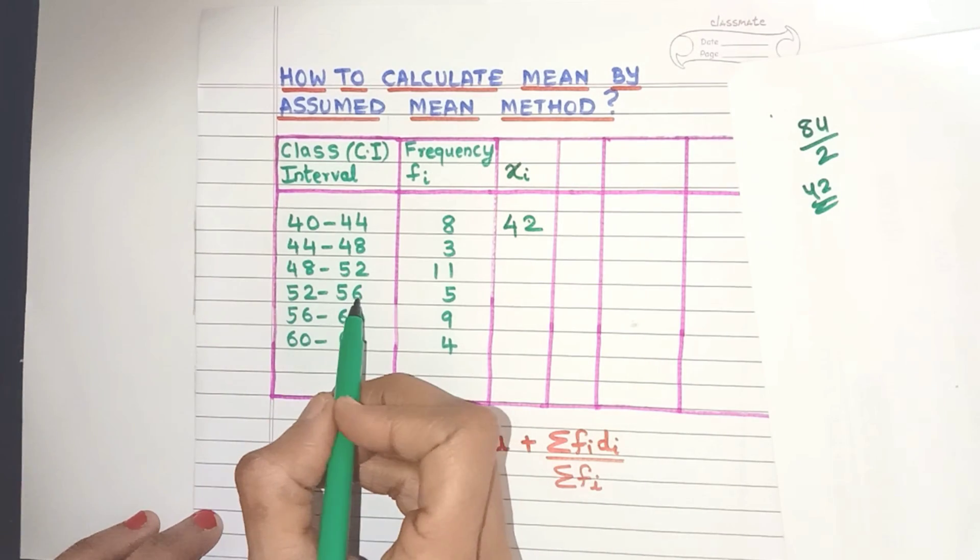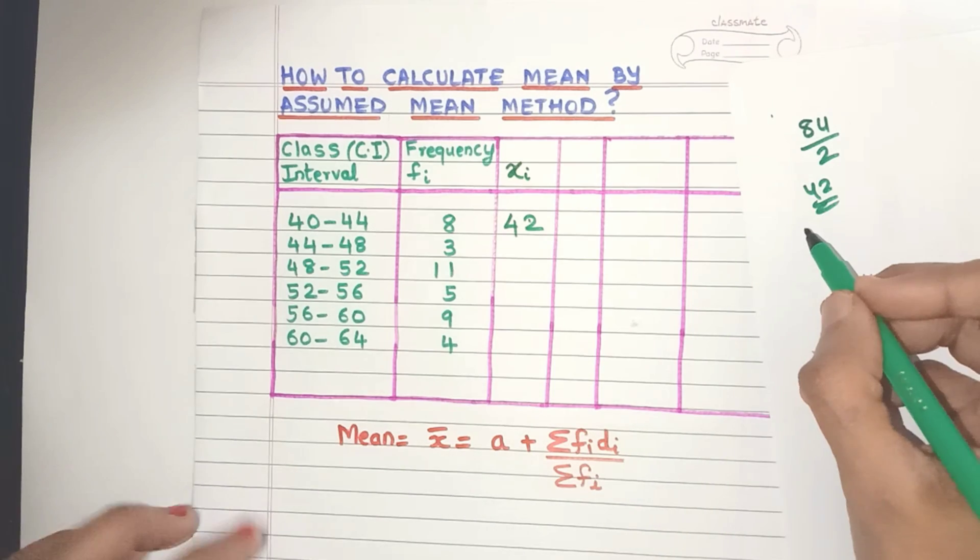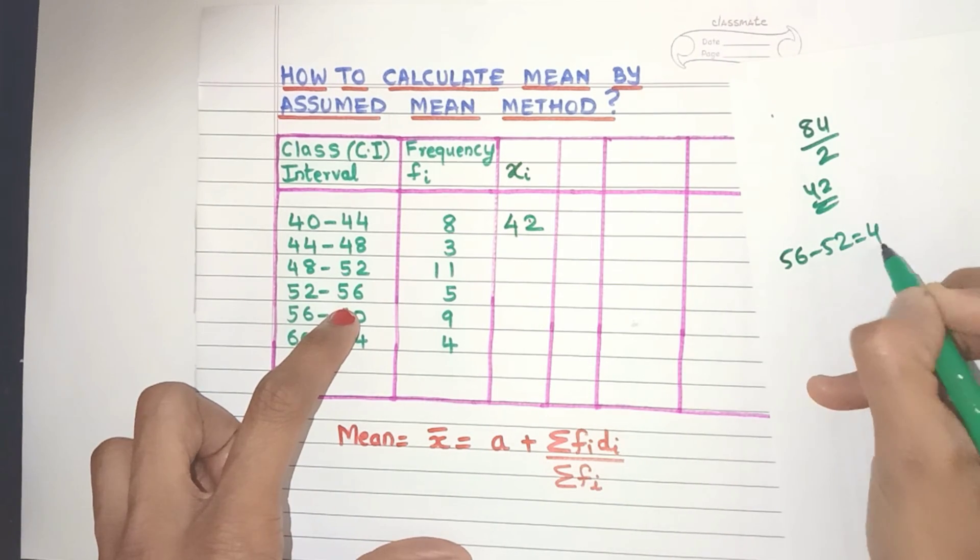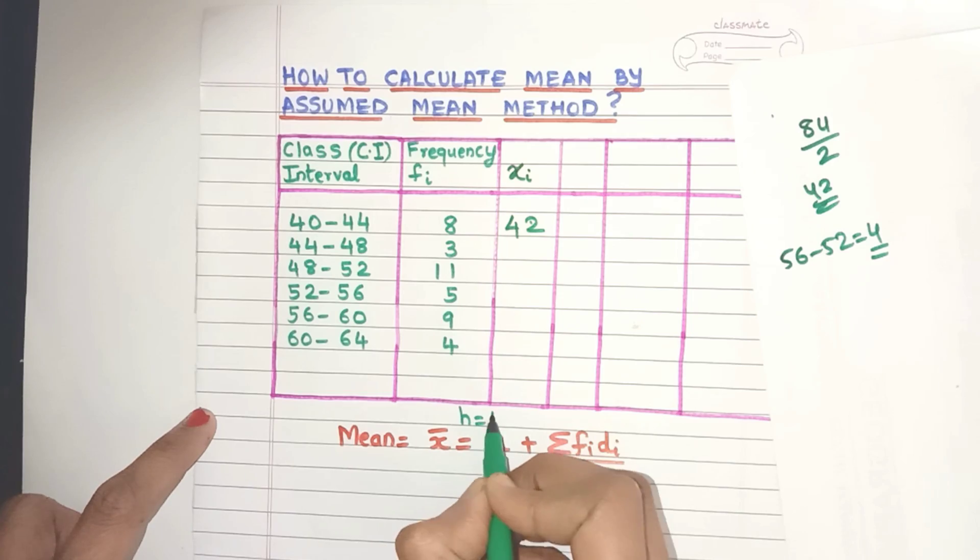Any class interval, just subtract the upper limit and lower limit. Say here if I take this class interval, 56 minus 52? Yes, 4. So h is 4 over here.